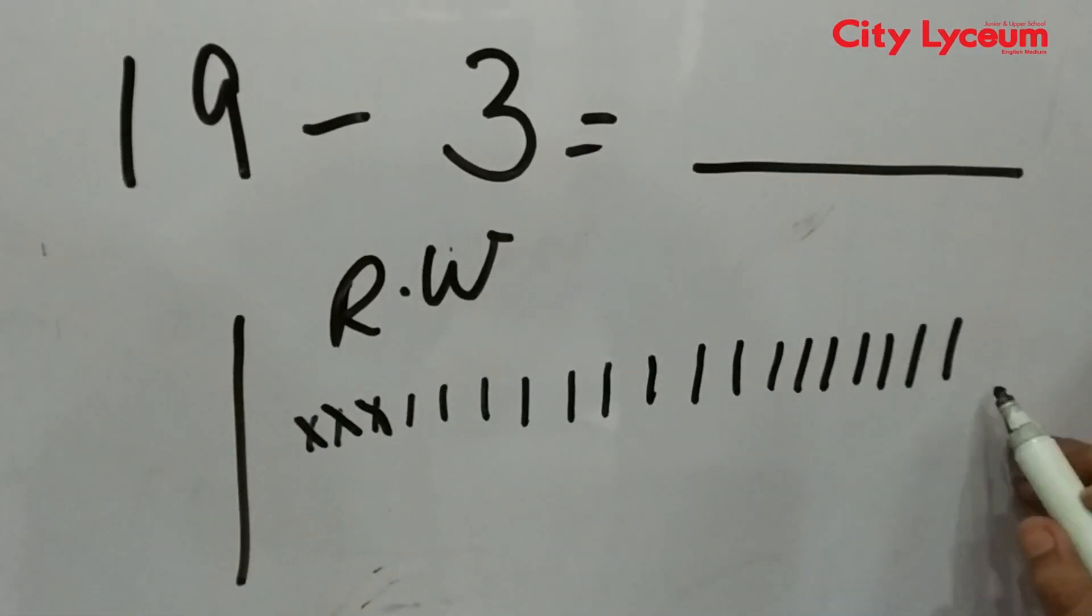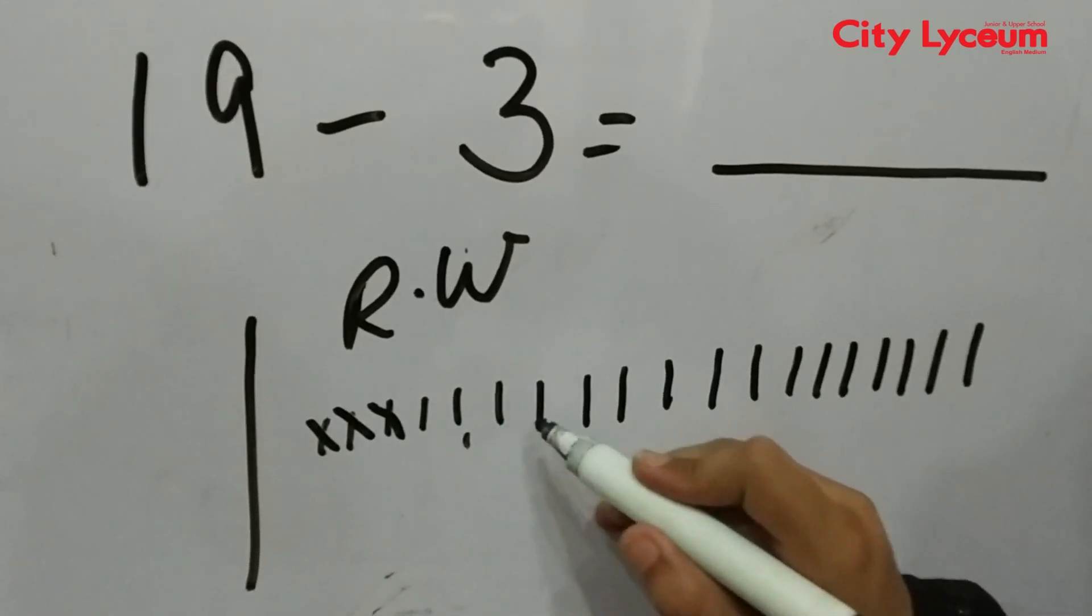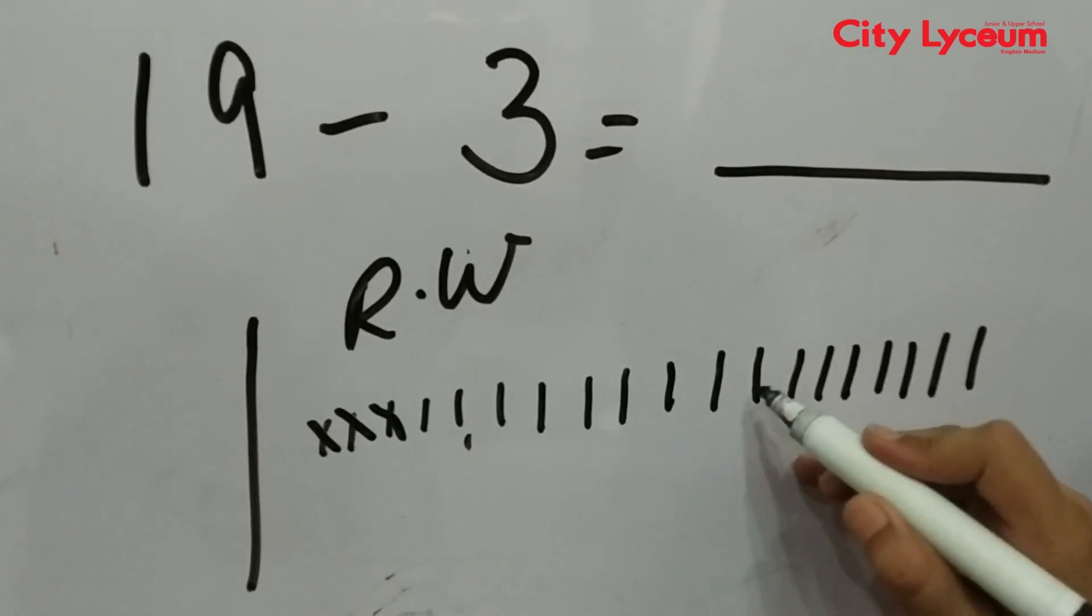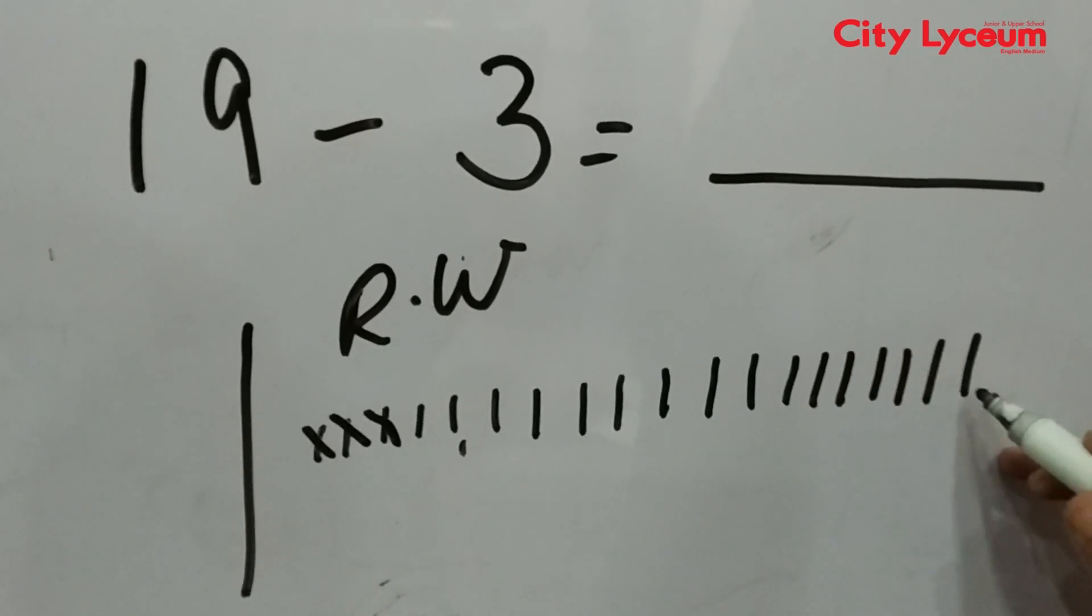And then we will count all the remaining lines: 1, 2, 3, 4, 5, 6, 7, 8, 9, 10, 11, 12, 13, 14, 15, and 16.